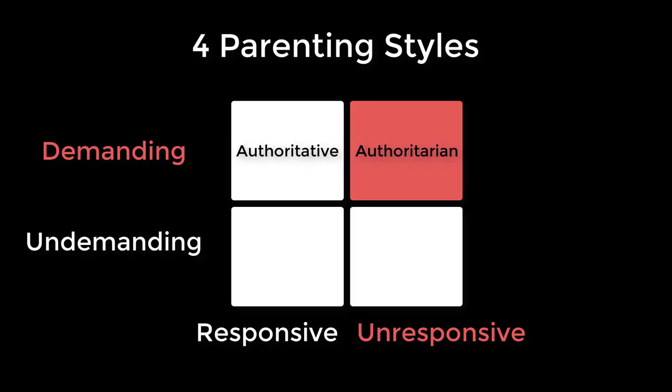A demanding and unresponsive parent is called an authoritarian parent — a restrictive, punishment-heavy style. They expect directions to be followed but may not give clear instruction. The goal is to give children tools to behave, survive, and thrive in a world that also may not give clear direction. This style tends to produce children who are not as socially competent but excel in the short term — obedient and conformist, but potentially prone to depression or anxiety later in life.